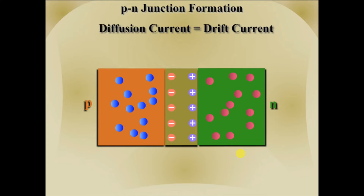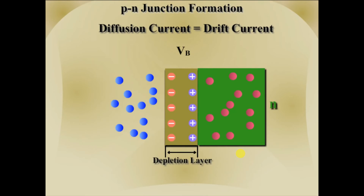Therefore a layer is formed where only immobile ions are present. This layer is called the depletion layer. The junction potential at this stage is called the potential barrier.